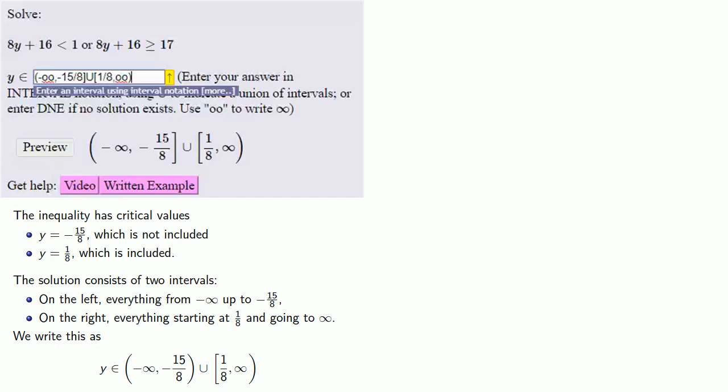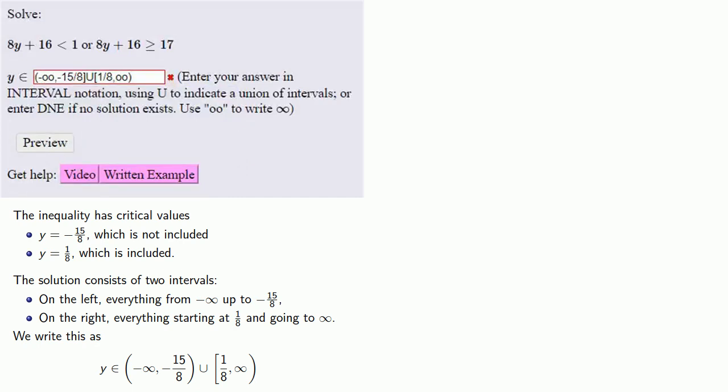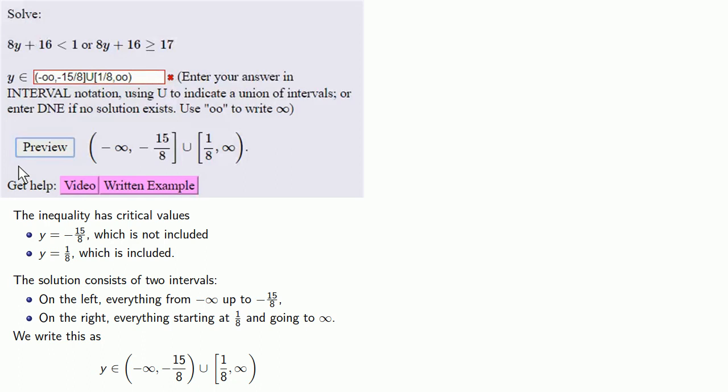Remember, MyOpenMath previews what we've actually entered. So if I hit submit, it's going to grade this answer whether or not that's what I want it to enter. Let's hit submit. Again, it marked the answer wrong. To see why this happened, check the preview. If we look carefully, we see that we used a square bracket instead of a parentheses.